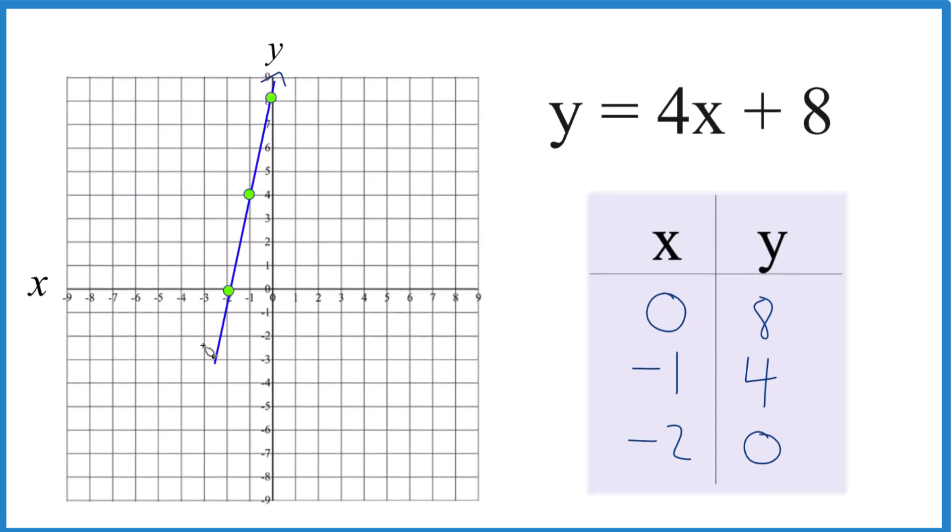Then we can put arrows here to show it goes to infinity. That's the graph for y equals 4x plus 8. And any value you would put in for x, you get a value for y. It would be on the graph here. That's it.